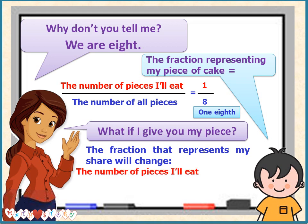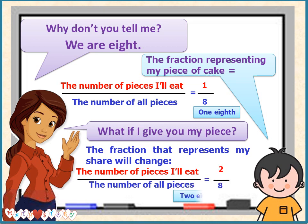What if I give you my piece? The fraction that represents my share will change. The number of pieces I will eat over the number of all pieces equals two over eight, or two eighths.